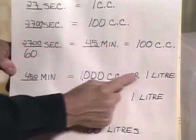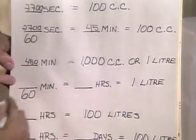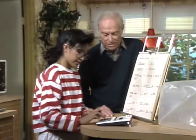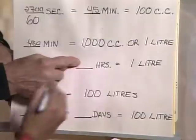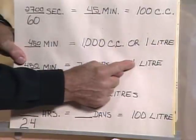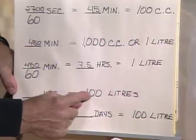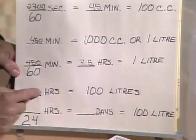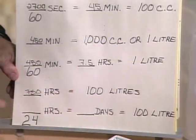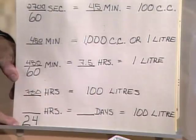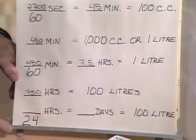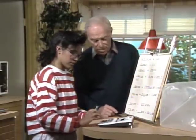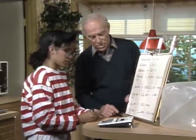Now we're going to take that figure — that's one liter — and change it into hours. So 450 divided by 60 equals 7.5 hours per liter. Now multiply by 100: that gives 750 hours for 100 liters. And we want to find that in days, so 750 divided by 24 equals 31.25 days, which is about a month.